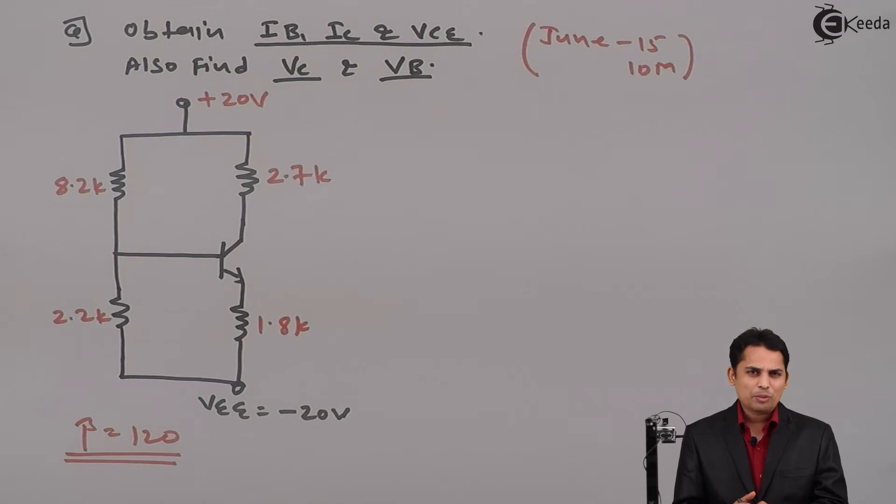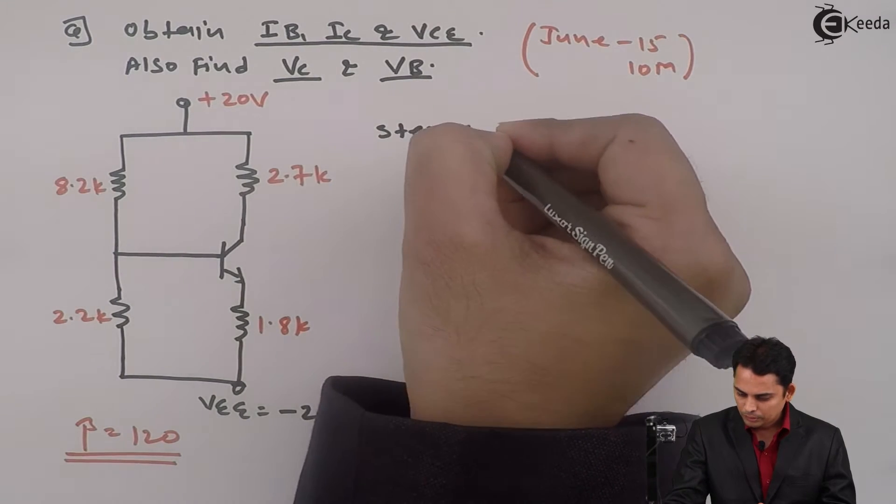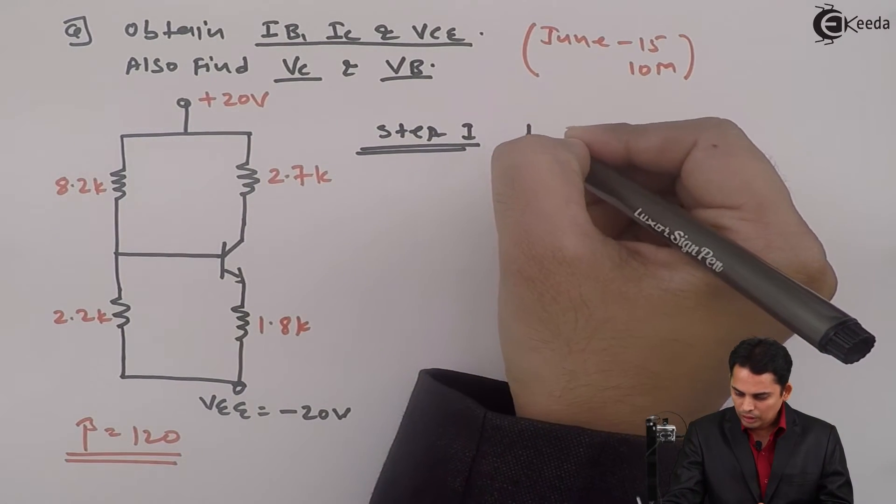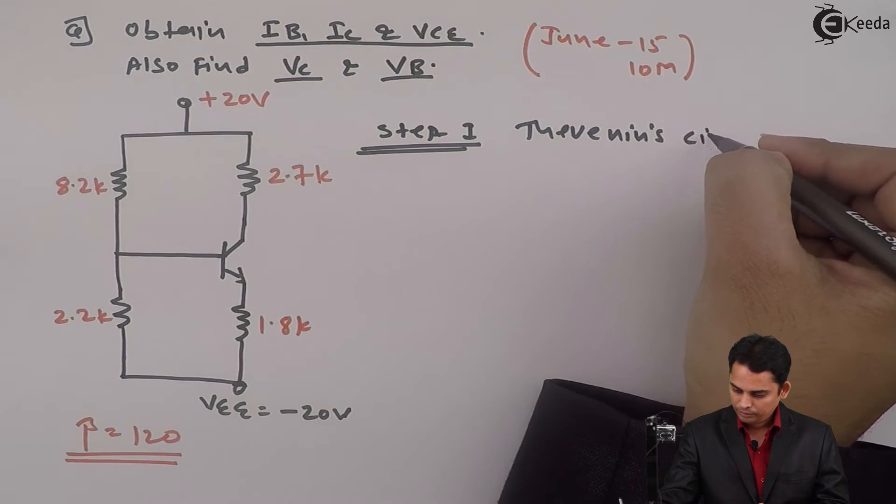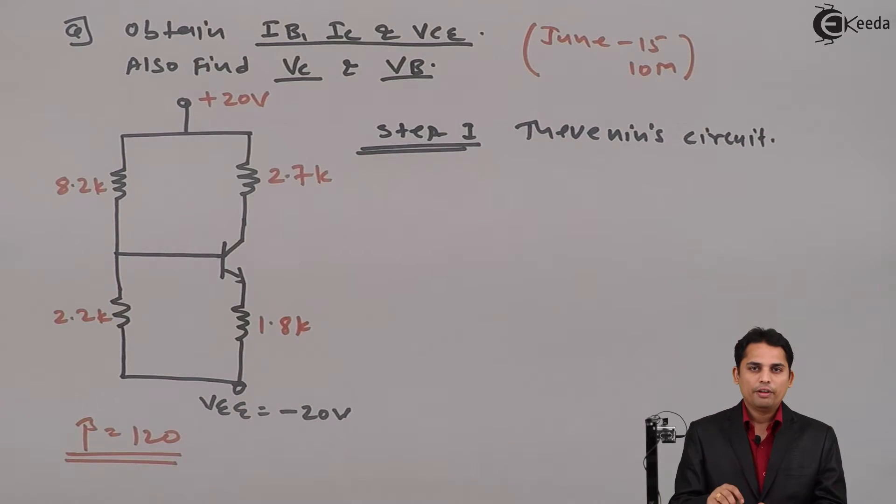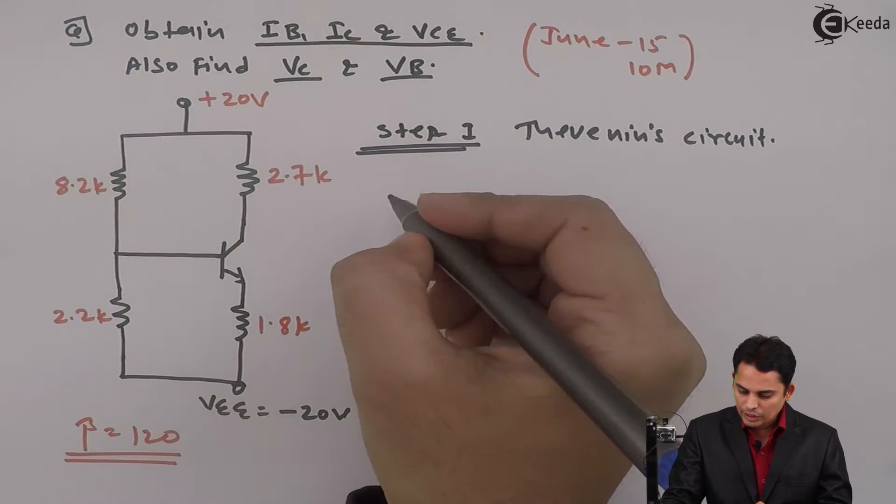Now the steps will remain same. Step 1 will be to find out Thevenin circuit, for which we need to find out Vth and Rth. Previously what we used to do is Vth used to be VCC multiplied by R2 divided by R1 plus R2. But in this problem we cannot apply that formula.